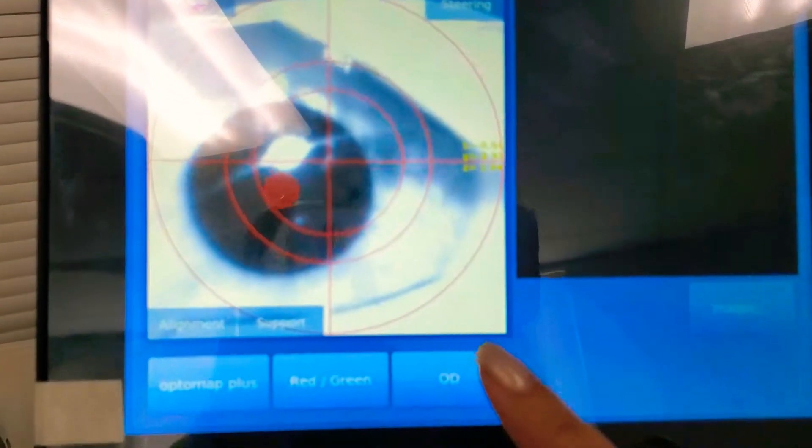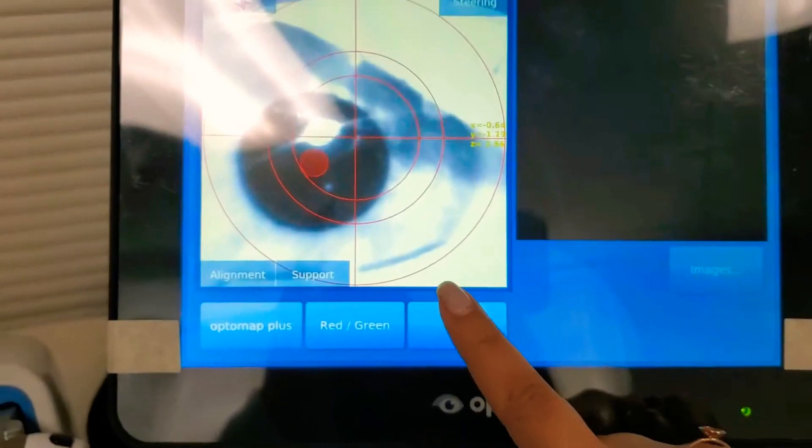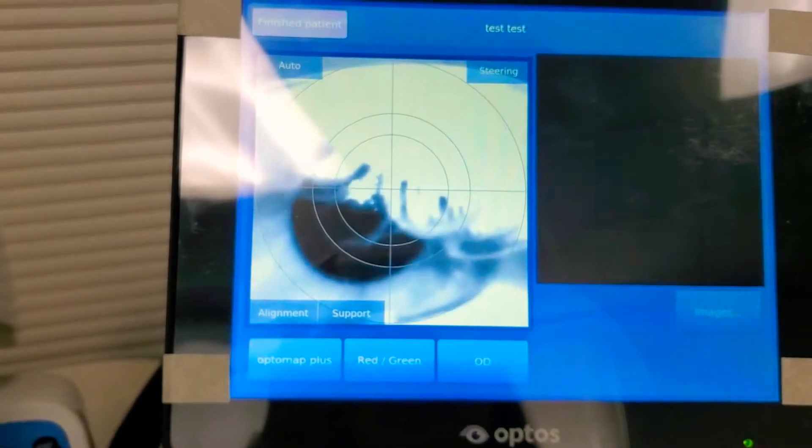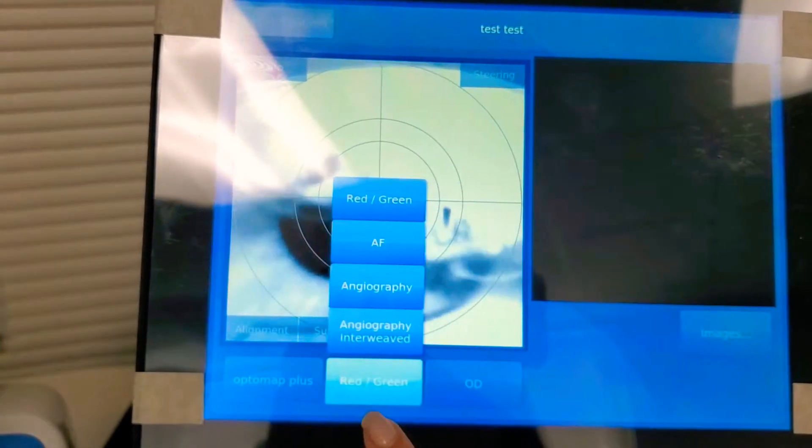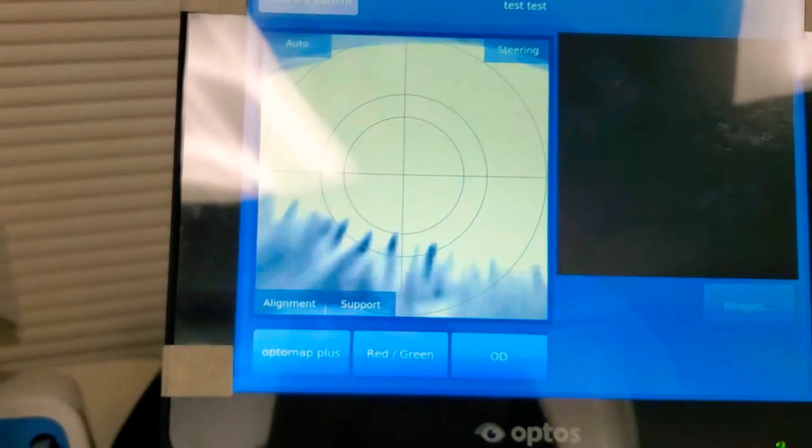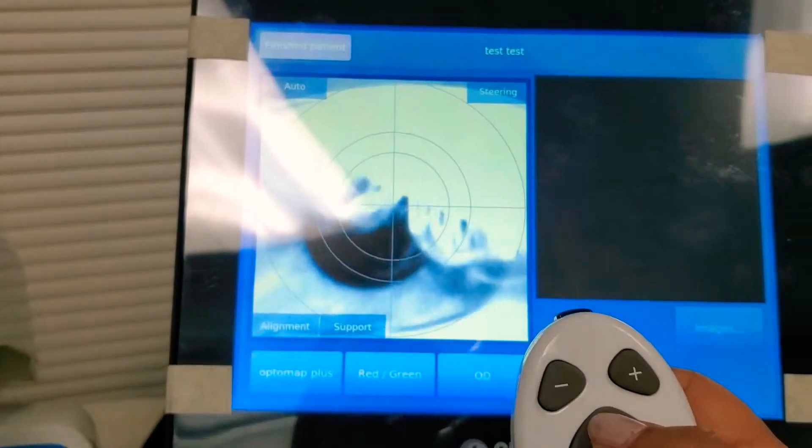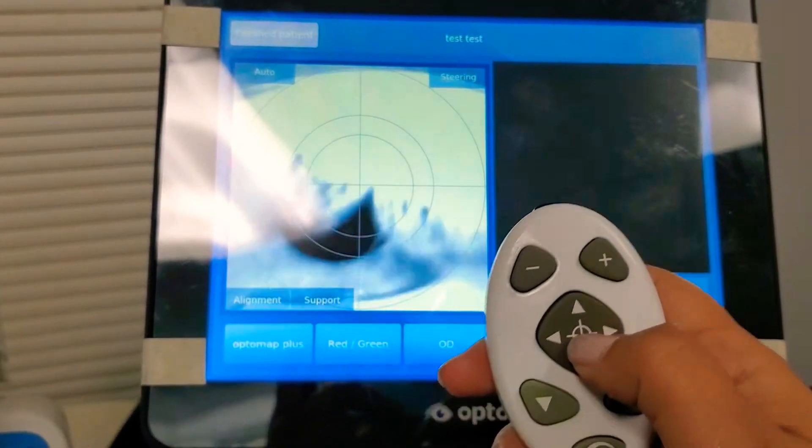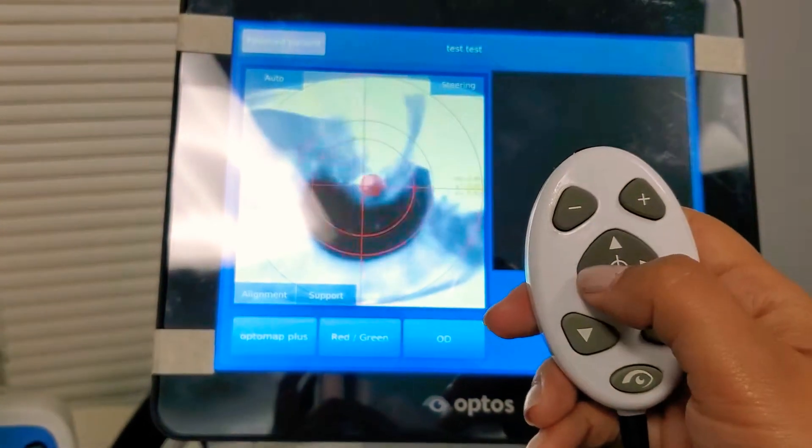And you can click this button to choose which eye, OS or OD. Right now, we're taking the general colored pictures, which is red, green. And from here, we'll use the joystick to move the patient around. So we go ahead.